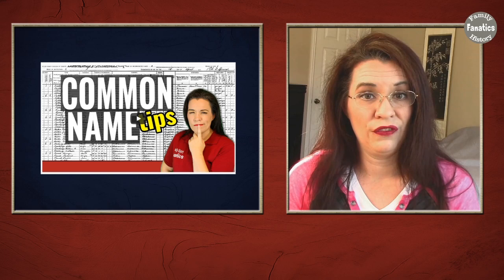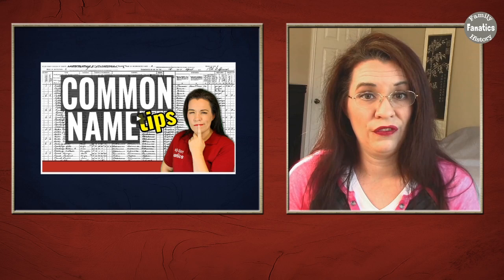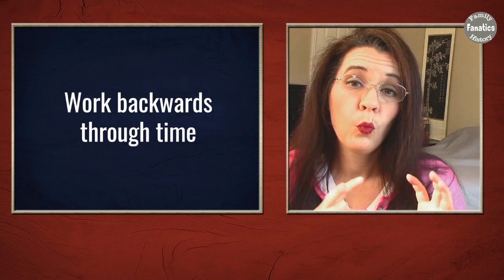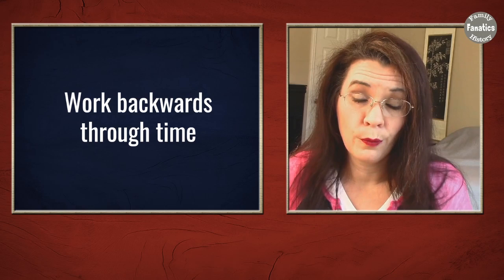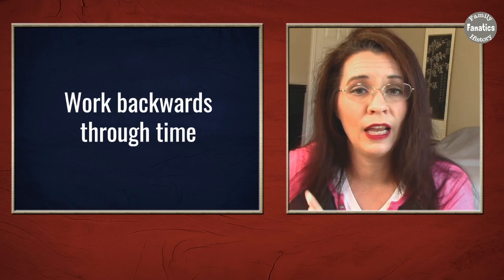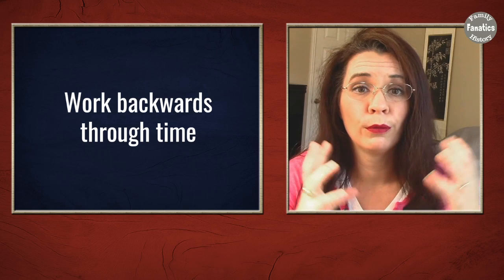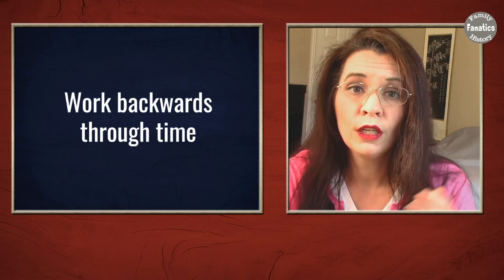If you have not watched those previous videos, head over to the show notes. When working with early U.S. Census records, the advice from most expert genealogists is to work backward through time. So even if we want to get to the 1840, 1830, and on back to 1790, you have to start with your most recent census records and move backward in time, then dive into those preceding records.